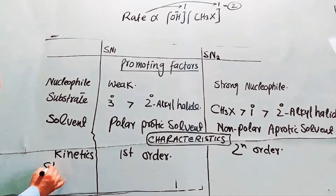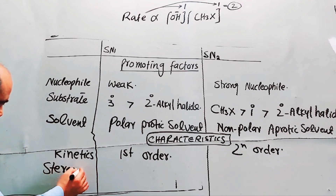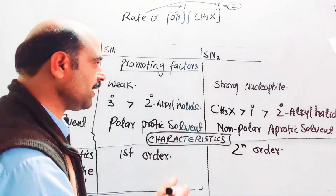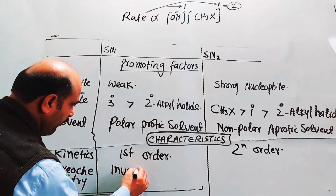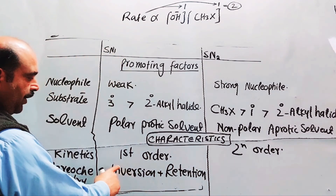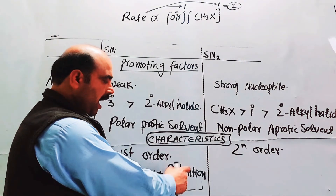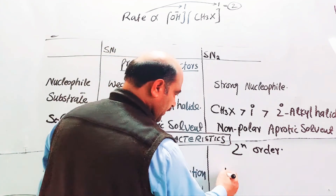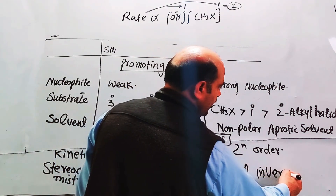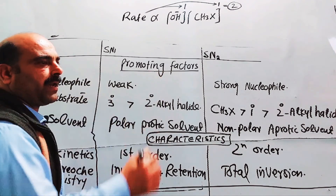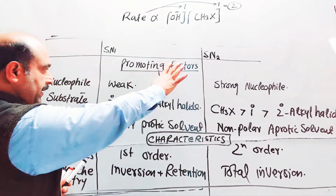Stereochemistry: SN1 gives 50% inversion plus 50% retention of configuration, because the nucleophile can attack from either side. SN2 gives total, 100% inversion of configuration.